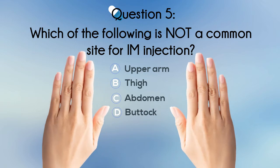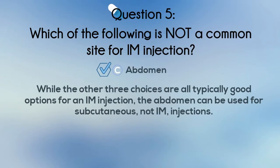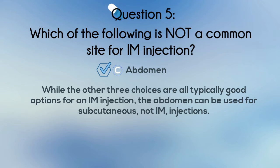The correct answer is C, abdomen. While the other three choices are all typically good options for an IM injection, the abdomen can be used for subcutaneous, not IM injections.